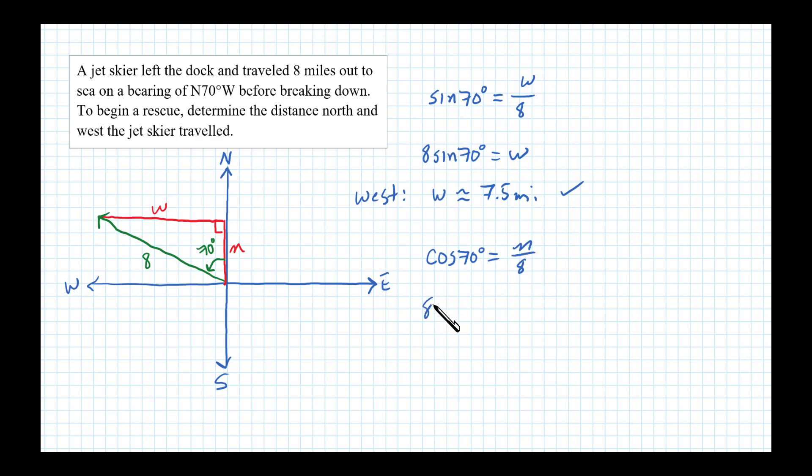In this case, n over eight. Cross multiplying, eight times cosine of 70 equals n. Now on a calculator, n is approximately equal to 2.7 miles.